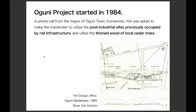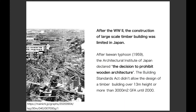In 1984, the Oguni project started. This is the first project in which Yo employed both timber and computer in his design. Yo received a phone call from the mayor of Oguni town, Kumamoto, and was asked to make a master plan to utilize a post-industrial site previously occupied by railway infrastructure. The Oguni mayor also asked him to utilize thin wood from local cedar trees to promote the forest industry.